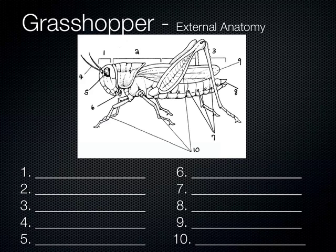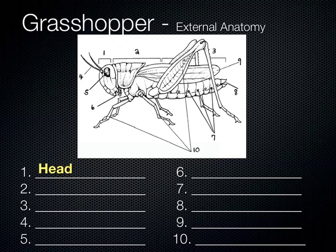One of the defining characteristics of the insect class is the number of body sections. That's one thing that makes it different from arachnids. Arachnids have two main body sections. Insects have three. And that's where we're labeled first. Now the first region up here, you can probably guess what that region is called — that's the head.